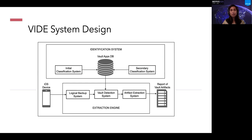Here is an overview of the VIDA system. VIDA has two main parts: the identification system and the extraction system. The identification system consists of two sub-phases: the initial classification system and the secondary classification system. In the extraction engine, when an iOS device is connected to a computer, we acquire a backup of the device. The vault detection system runs in the background, reads from the vault application DB, and is capable of extracting artifacts from the mobile device which contain evidence. Finally, we are able to generate a report of vault artifacts.